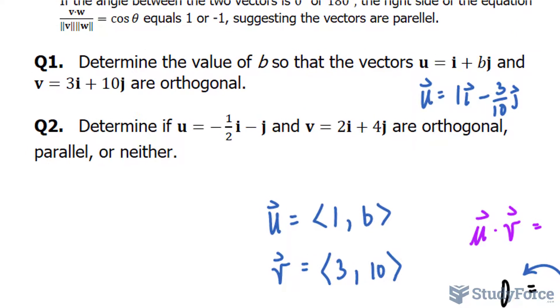Let's move on to question two. Determine if the vector U, given these components, and V, given these two components, are orthogonal, parallel, or neither.